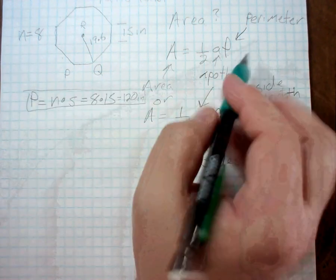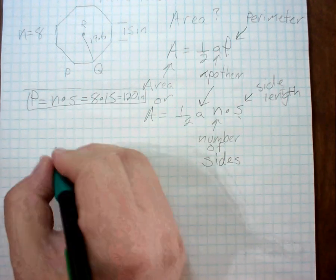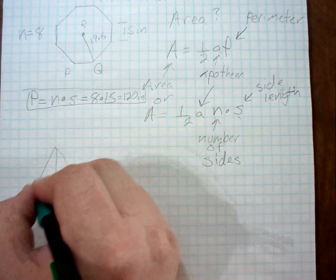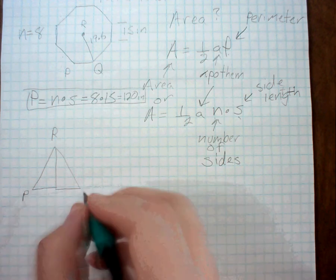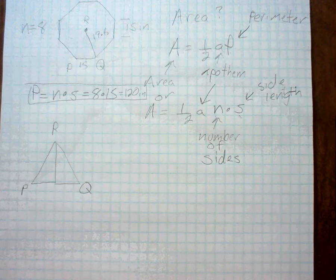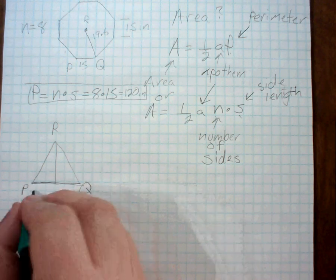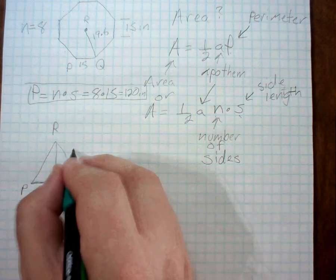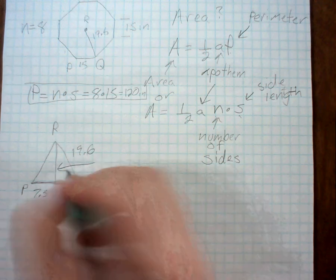Now the other thing that I need is the apothem. So now to find the apothem, this is going to be a little bit tricky. I'm going to break this down. So this would be like R, this would be P, and this would be Q. Now I know the length from P to Q is 15 inches because that's the length of the sides. So that means this would be 7.5 and that means this would be 7.5. And I know the length from here to here is 19.6. But what I really need to know is what is this? This is the apothem.